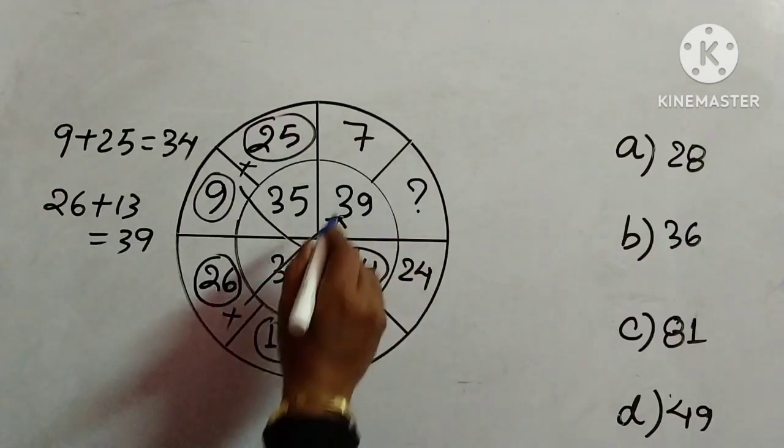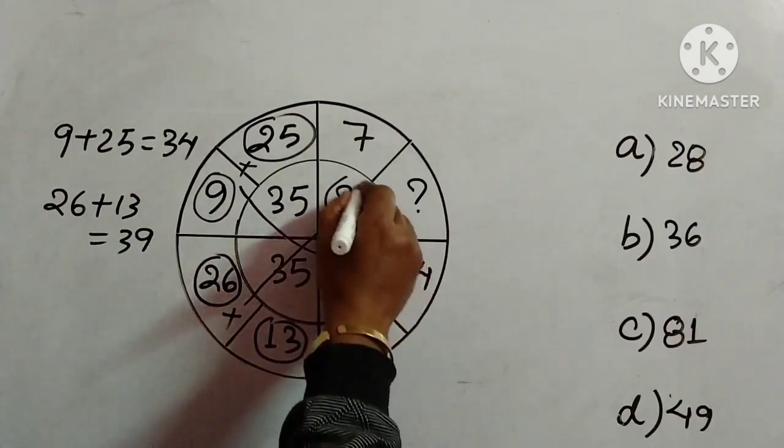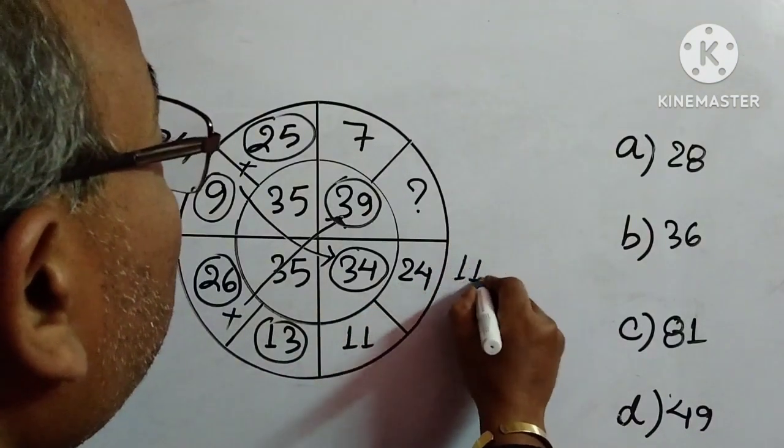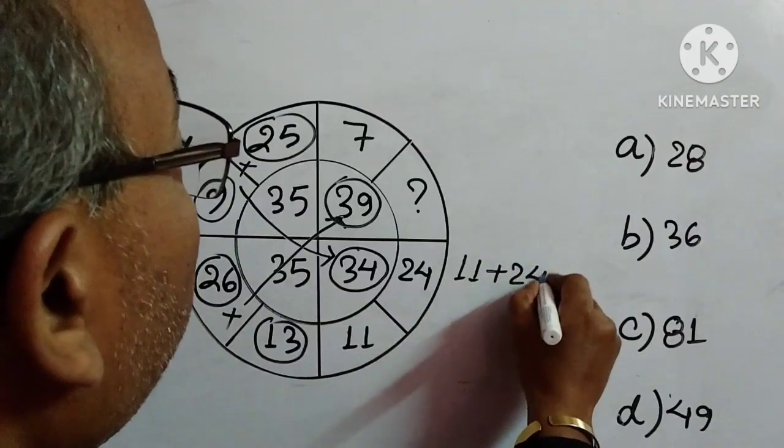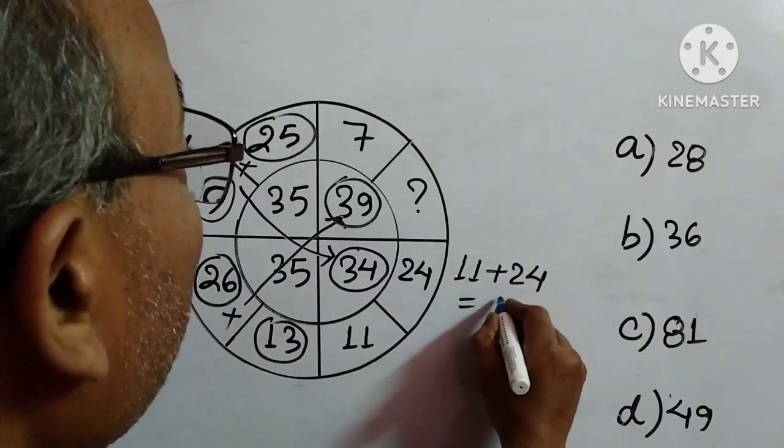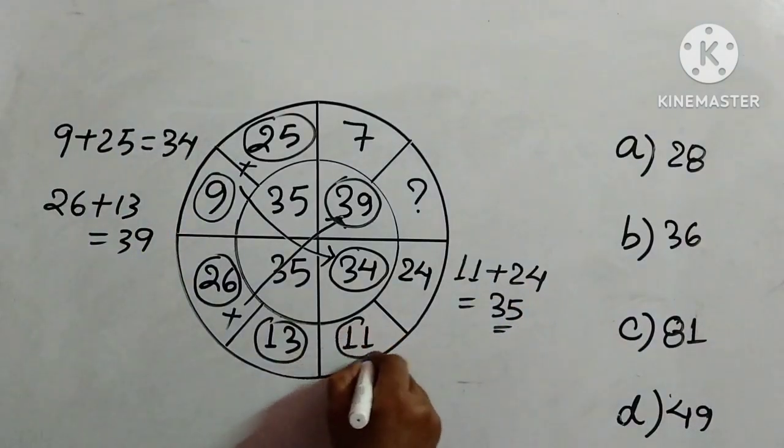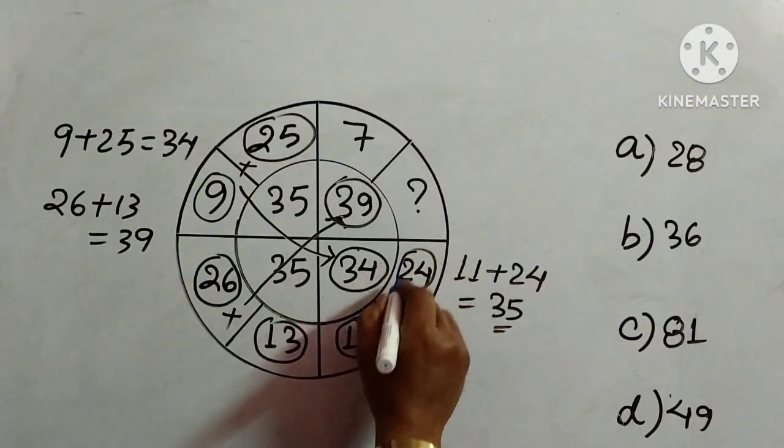Now we will consider 11 and 24. So 11 plus 24 equals 35. We have considered 11 and 24, added them, and where is the result? Here: 35.